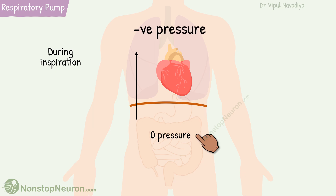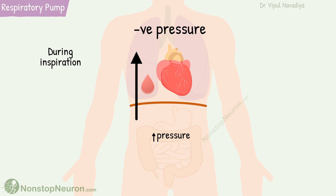At the same time, the content of the abdomen is compressed, so the pressure in the abdomen increases. Thus, the pressure gradient from the abdomen to the chest becomes even stronger, so more blood is pulled faster and the venous return increases.